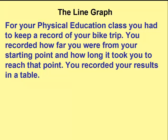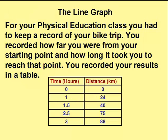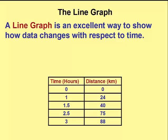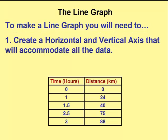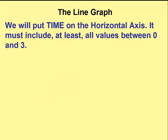In this second example, we'll say that you had to keep a record of your bike trip for your physical education class. You recorded how far you were from your starting point and how long it took to reach that particular point — so we have time in hours and the distance at that point. A line graph is an excellent way to show how things change with respect to time.